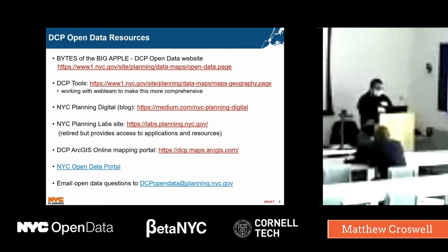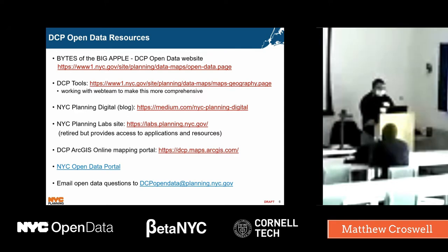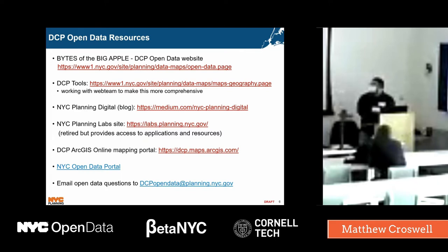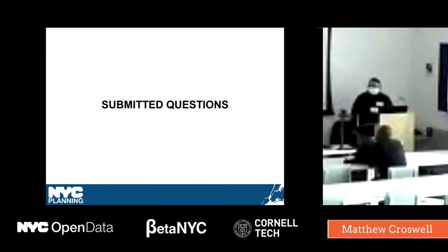You can also go to our ArcGIS Online portal if you're looking for other City Planning applications hosted there — a combination of applications and story maps, including information on how the 2020 census was reconfigured and our files involving flood hazard buffers. All of our data is also on the NYC Open Data portal. If you ever have any questions about any of our data sets, you can email us at planning@nyc.gov.